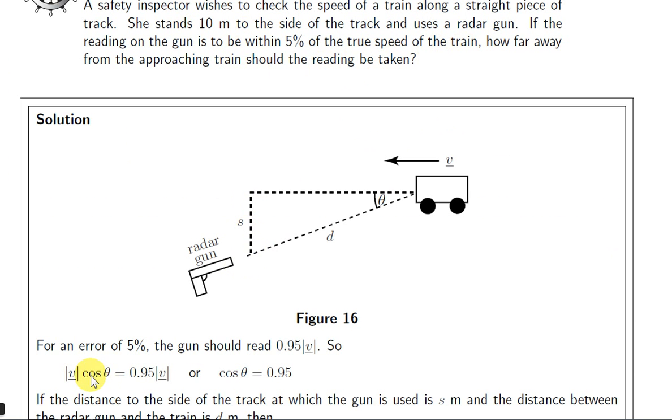So, as we saw before, the gun will register a speed of V cos theta. Now, this is one way to indicate the magnitude of V. The other way is just to write V without any lines or any underline. Suppose we want the reading on the gun to be 5% below the true speed of the vehicle. 5% of V taken from V. Well, that's the same as 95% of V. From this, we get that the cos theta at this angle is 0.95.